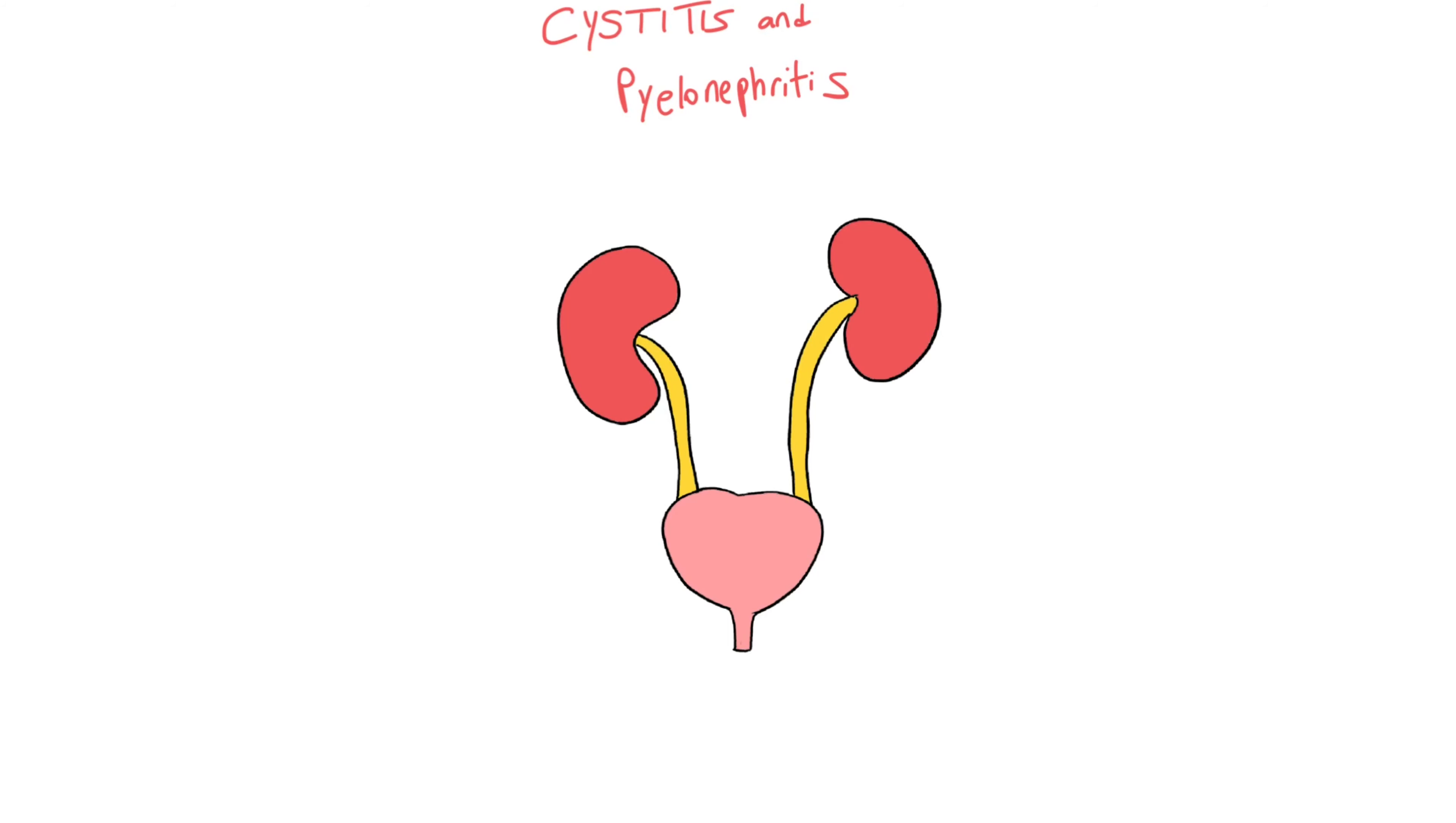I'm sure you guys are aware of the anatomy but I'm going to go through it briefly. These bean-shaped structures are the kidneys themselves, so let's just name it: kidneys, ureter, and bladder.